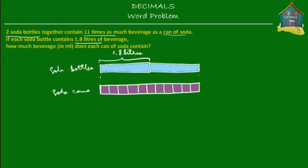Now, what do we have to find out? We have to find out how much beverage does each can of soda contain — how much is each can equal to in milliliters. The blue bottles are given in liters, but we have to find the answer in milliliters. So let's convert everything to milliliters first.